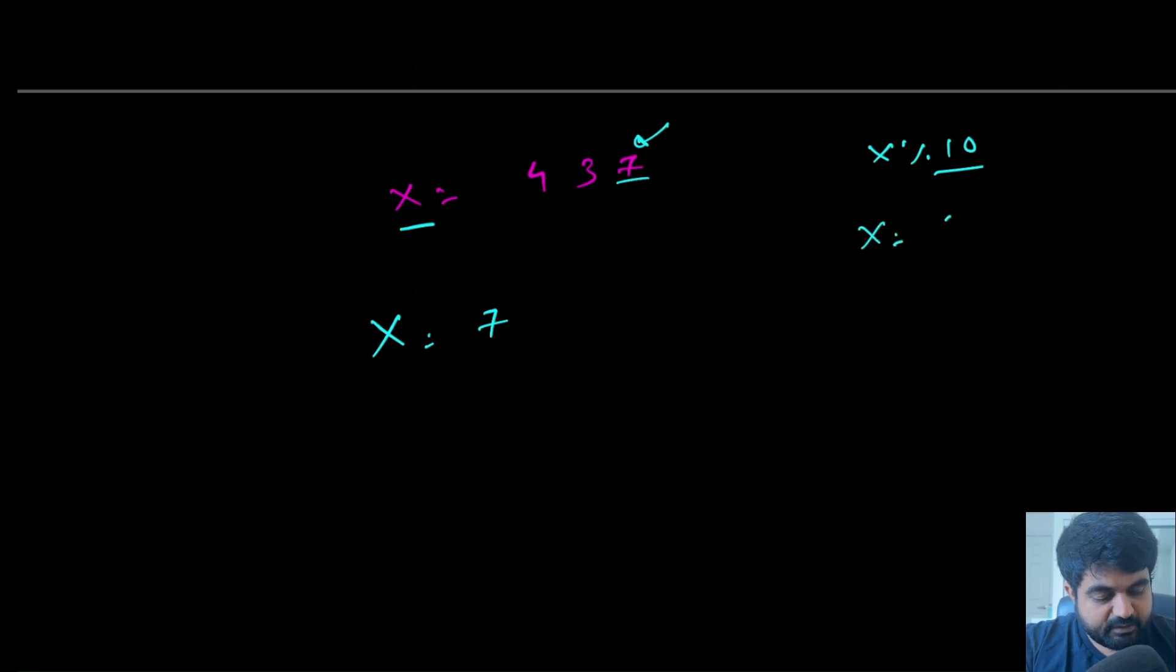After that, we are going to run this operation x is equal to x divided by 10, so that would eliminate this 7 from this existing number. After this, once again we are going to repeat the same operation. Now this time the remainder number is going to be 3, so once again we would append 3 over here and then remove 3 from this existing number. Lastly, we will have 4, so we will add 4 over here.